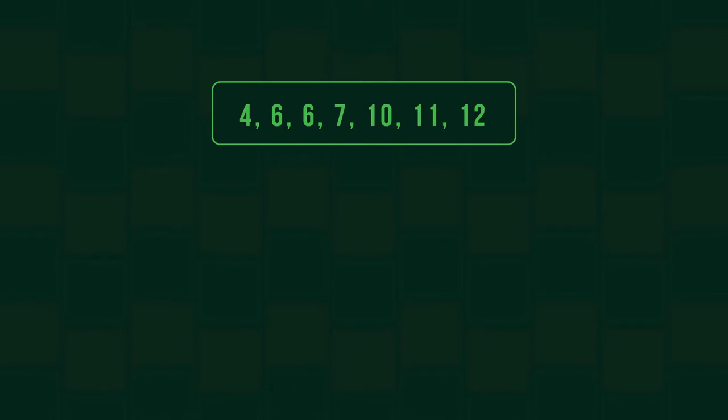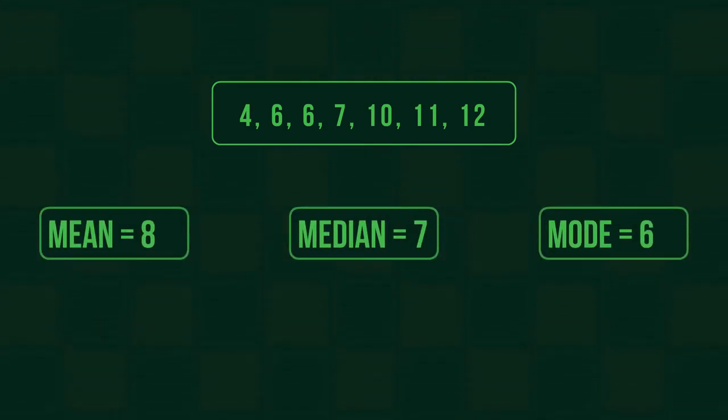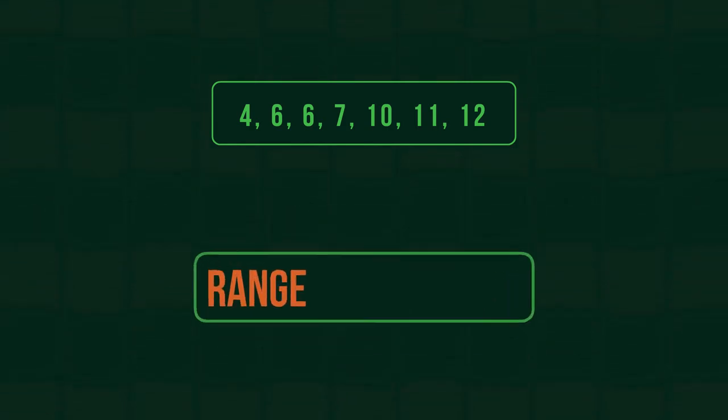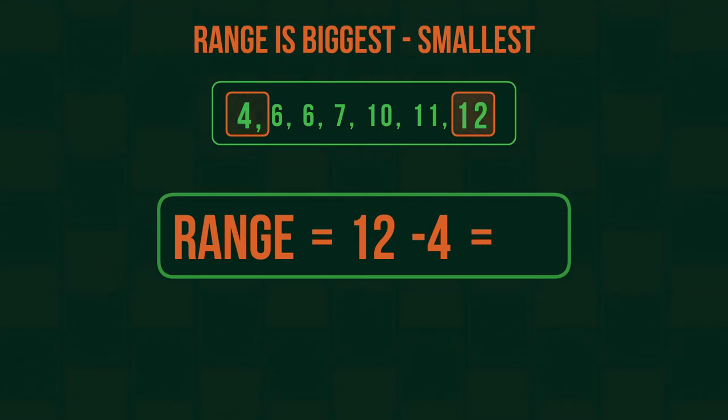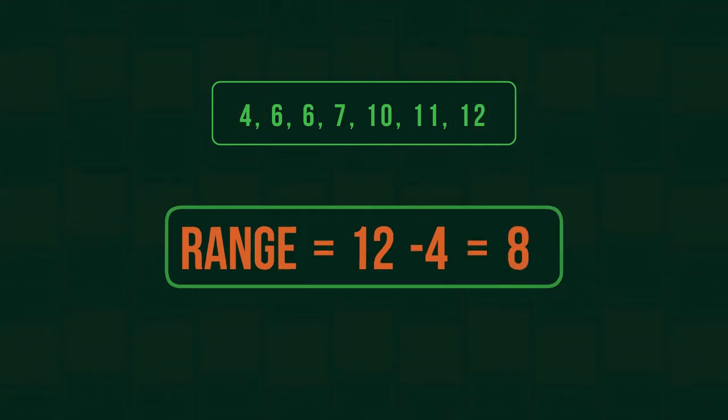The range - you've probably come across three different measures of average: mean, median, and mode. The range also often gets added onto these three, although it isn't actually a measure of the average. It's the difference between the largest and the smallest value in the data. So the range here is 12 subtract 4, which is 8.